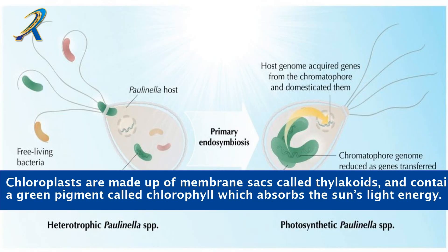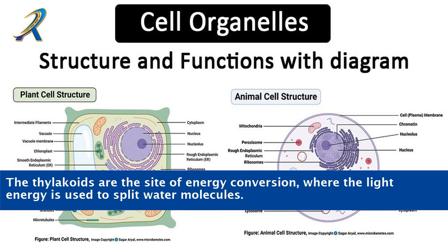Chloroplasts are made up of membrane sacs called thylakoids, and contain a green pigment called chlorophyll which absorbs the sun's light energy. The thylakoids are the site of energy conversion, where the light energy is used to split water molecules.